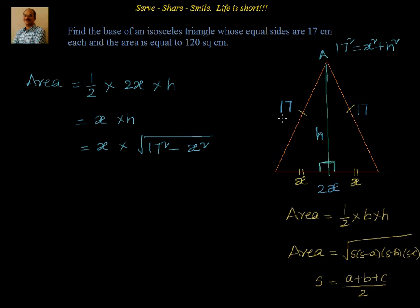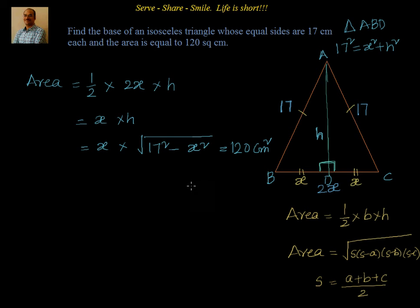If we label the triangle's vertices A, B, C and D, considering the right triangle ABD, we have 17² = x² + h². So area = x·√(17² − x²). We have been given that this area equals 120 cm². So x·√(17² − x²) = 120. Squaring both sides to eliminate the square root gives x²·(289 − x²) = 14400.